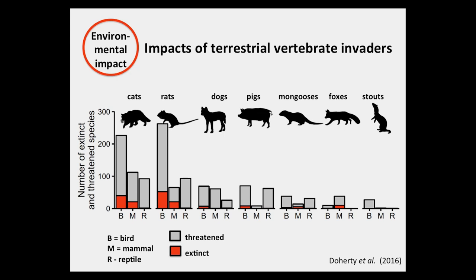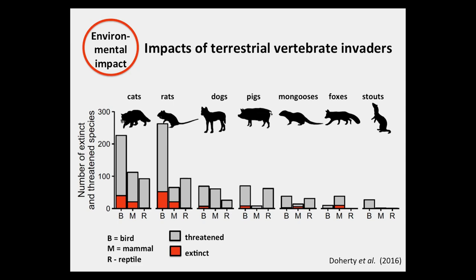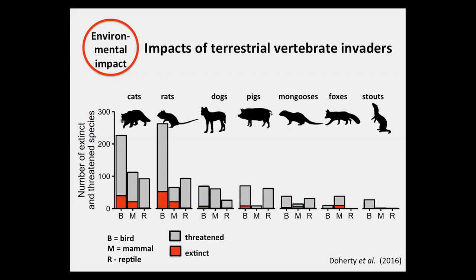Vertebrate invaders can also be environmentally disruptive. This figure comes from a meta-analysis published by Doherty et al. in 2016 that shows the ability of different vertebrate invaders to reduce the populations of birds, mammals, and reptiles and also to drive those species extinct. You can see that cats and rats figure prominently among these vertebrate invaders and have a variety of effects on the native biotas where these species are introduced.